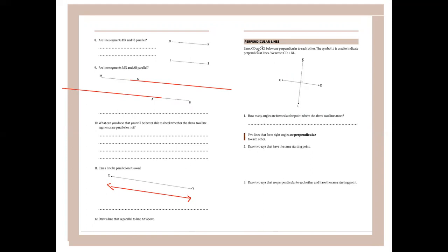Now we look at perpendicular lines. Lines CD and KL are perpendicular to each other. The perpendicular symbol looks like a right angle and is used to indicate perpendicular lines, so we write 'CD is perpendicular to KL.' Four angles are formed at the point where the two lines meet, all of 90 degrees, so all those angles added together make 360 degrees. Two lines that form right angles are perpendicular to each other.